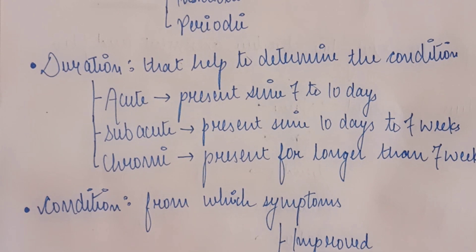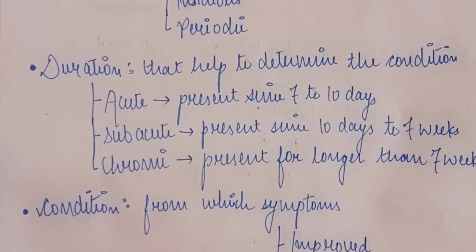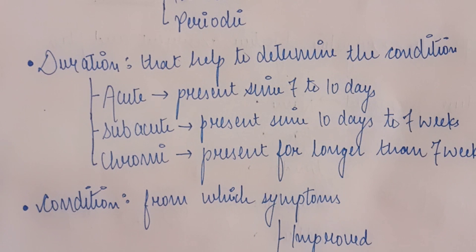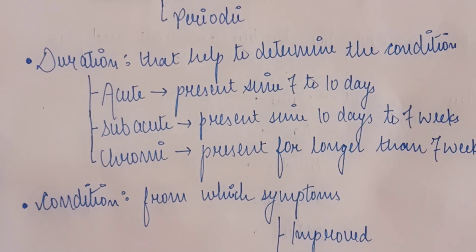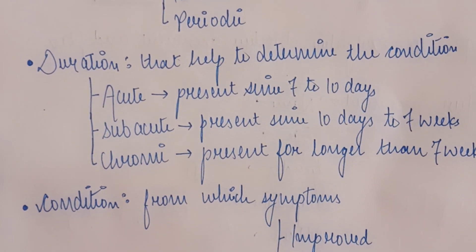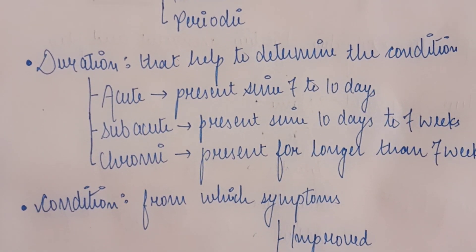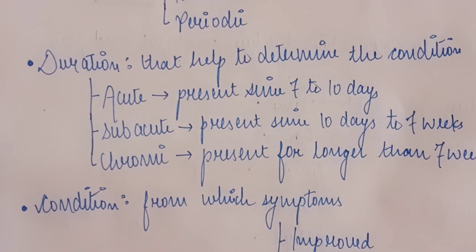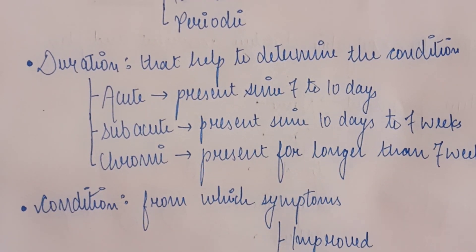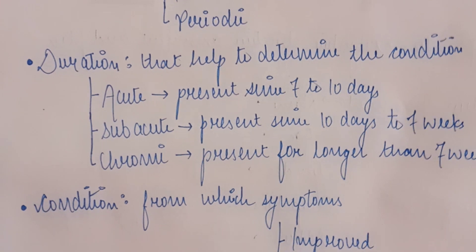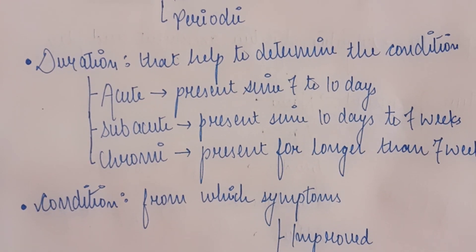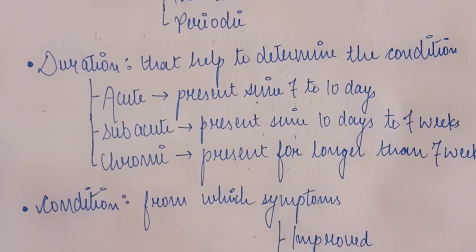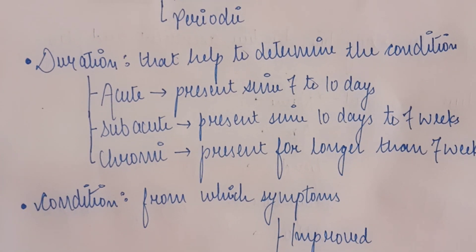Acute presents within seven to ten days — that is, one week to almost ten days. For example, low back pain since five days would come under the acute condition, as it is within one week.